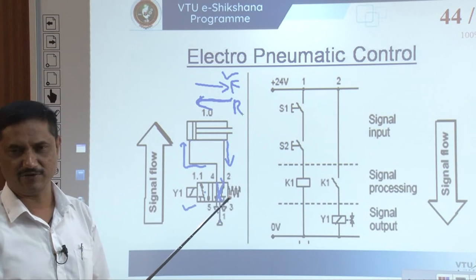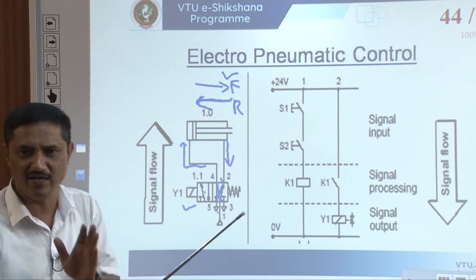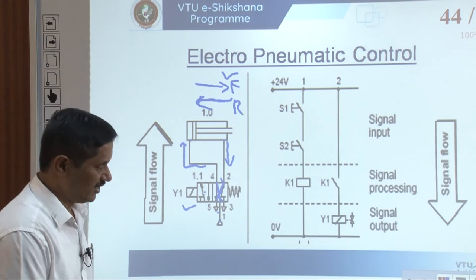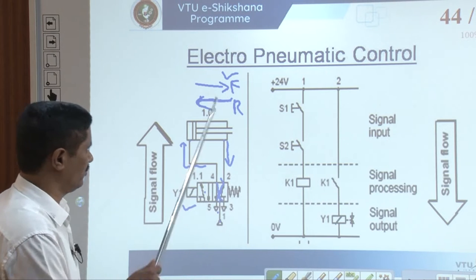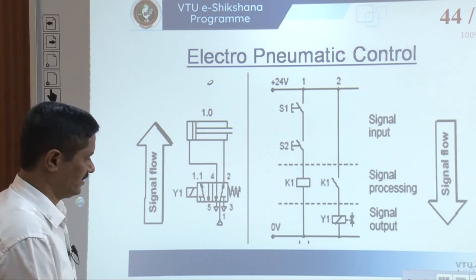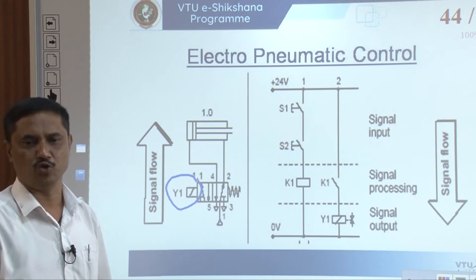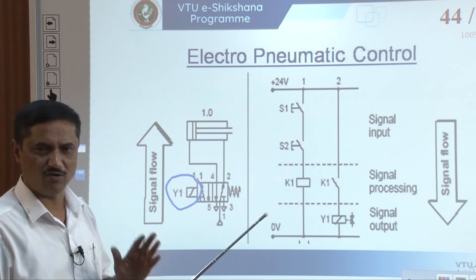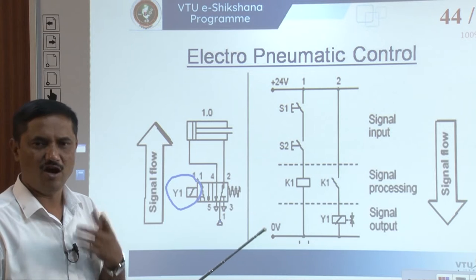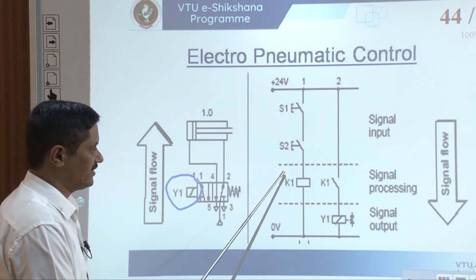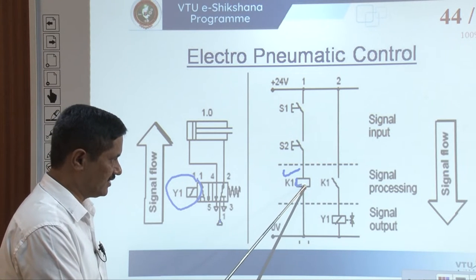Now consider the corresponding electrical circuit using AND logic. The output element Y1 is the solenoid, and we use one relay K1 to energize it. The relay coil K1 is placed in line 1. We take switches S1 and S2 — both normally open — connected in series. If you press S1 alone, current can flow only up to S1 since S2 is still open, so the relay coil does not get power. You must press both S1 and S2 for current to reach the relay coil — this is AND logic.